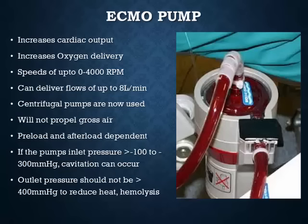The ECMO pump increases cardiac output and oxygen delivery. Speeds can go up to 4,000–5,000 RPM depending on the machine, and these machines can deliver flows up to 8 to 10 liters per minute. Centrifugal pumps are now most commonly used. They will not propel gross air into the patient, and they are preload and afterload dependent — they work on a servo mechanism. Inlet pressures shouldn't exceed negative 100 to negative 300 mmHg, otherwise cavitation can occur. Outlet pressures shouldn't exceed 400 mmHg, otherwise you can get heat development or hemolysis.